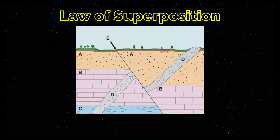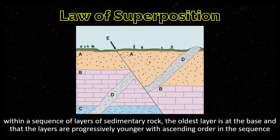Next, we have the law of superposition. This figure implies that new rock layers are always deposited on top of existing rock layers, meaning deeper layers must be older than those closer to the surface. This law states that within a sequence of layers of sedimentary rock, the oldest layer is at the base and the youngest layer is at the top.